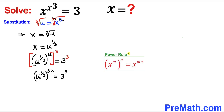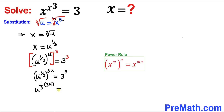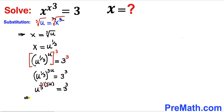Now we are going to apply the power rule once again on the left hand side. In other words, I'm going to multiply out 1 third times 3u. So therefore we can write u power 1 divided by 3 times 3u, equal to 3 power 3. We can see that 1 third and 3 undo each other, so therefore we end up with u power u equals to 3 power 3.